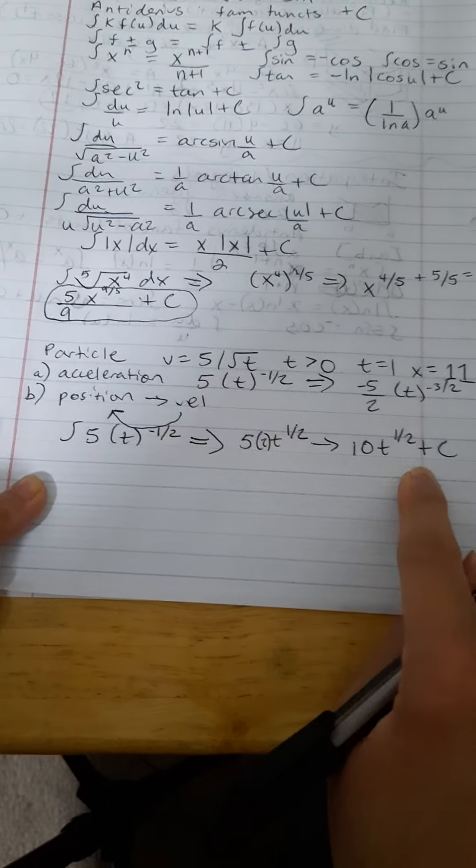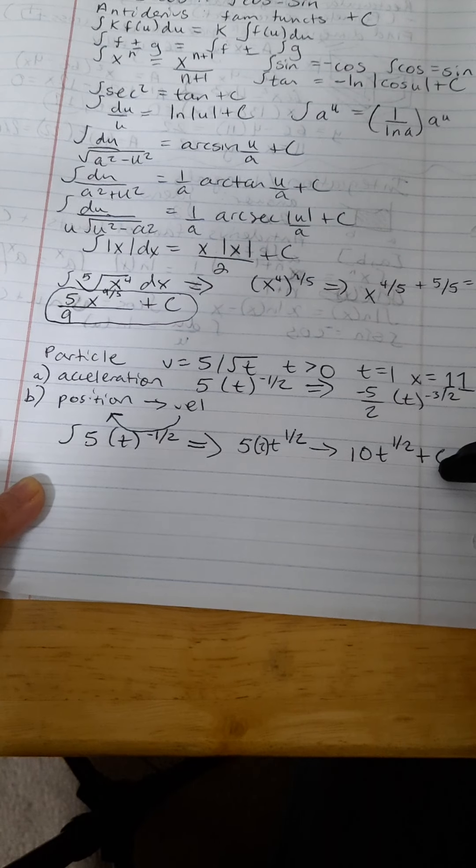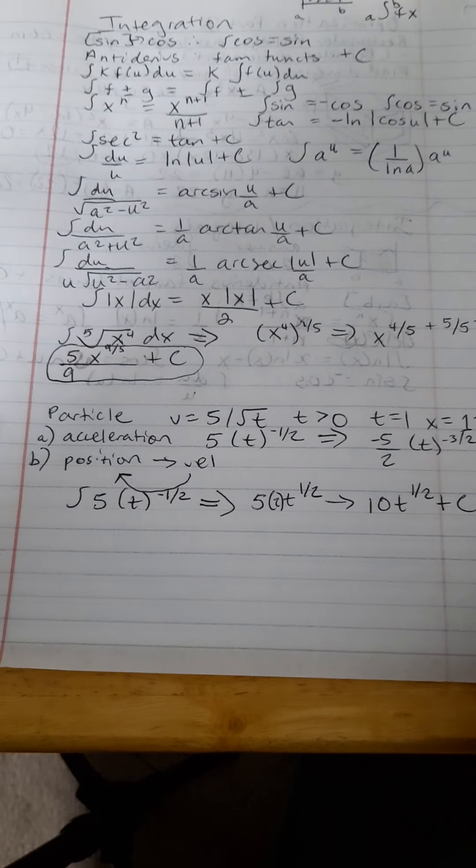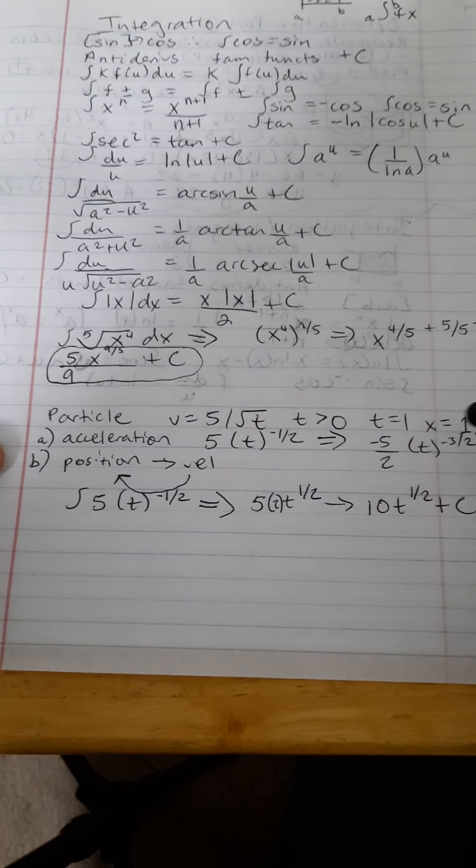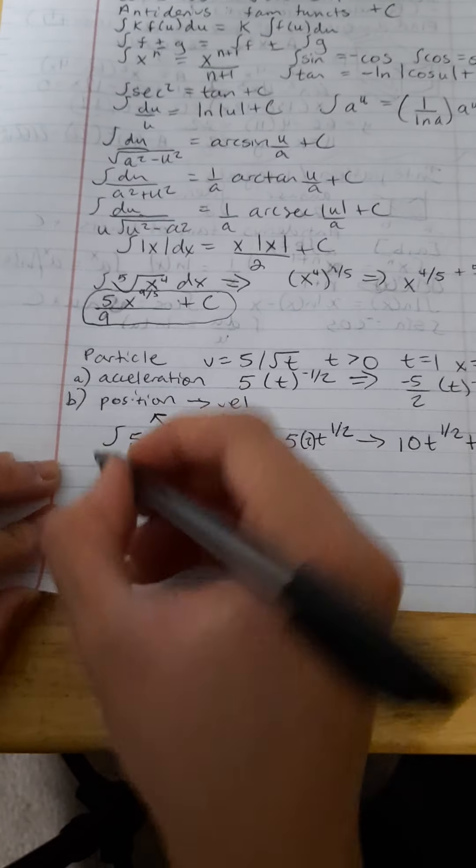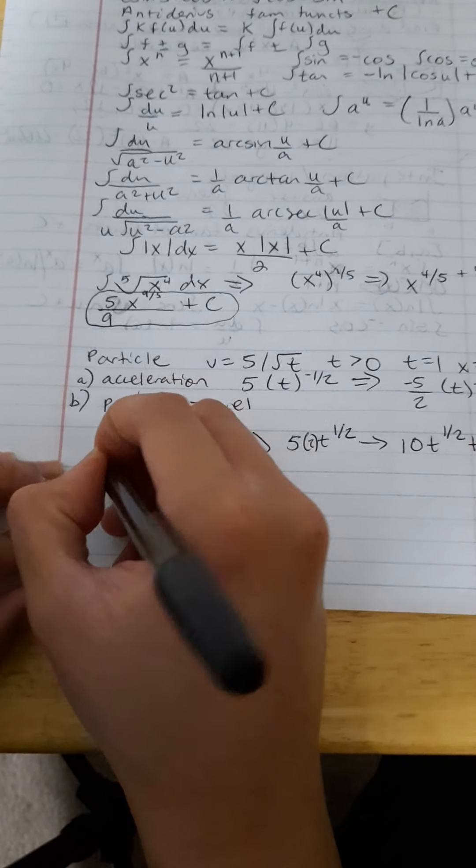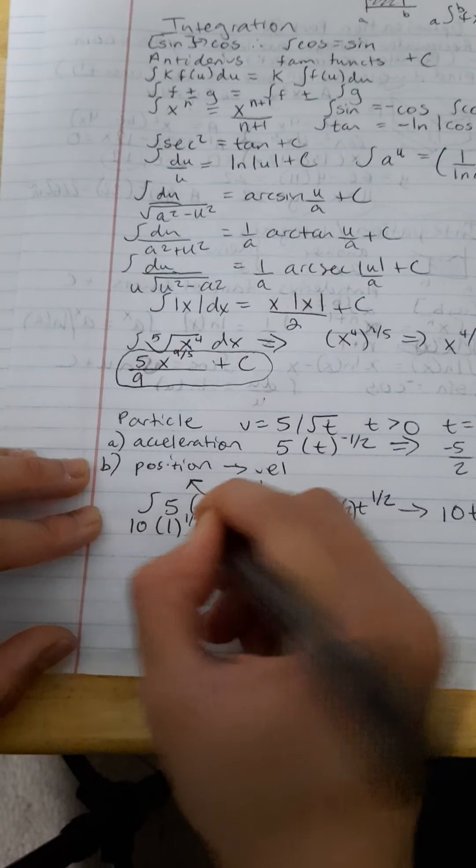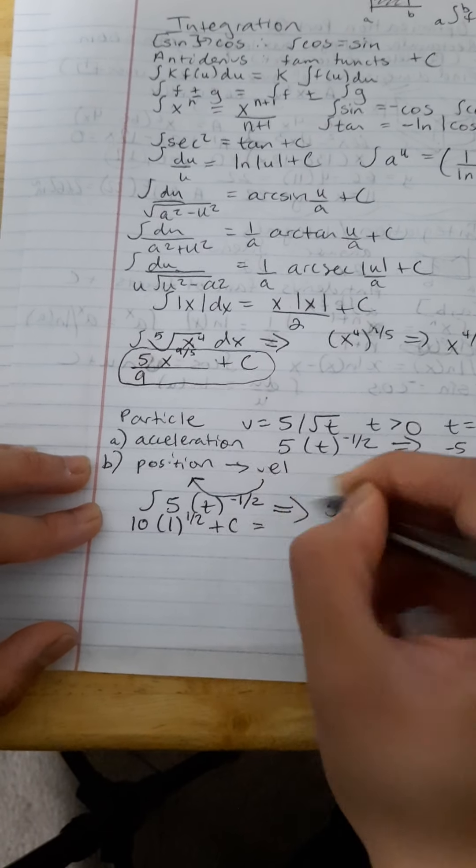Now, remember, it's an antiderivative, so it's a family function since we have a plus c there. We need to know the specific position function, when t is equal to 1 and x is equal to 11. So, how are we going to do that? Well, we're going to plug in 1 for t,